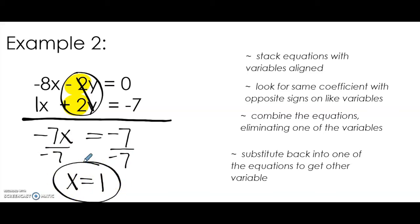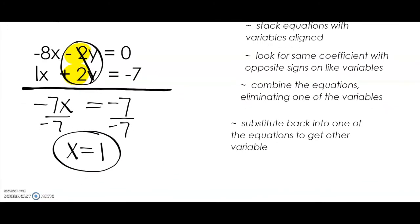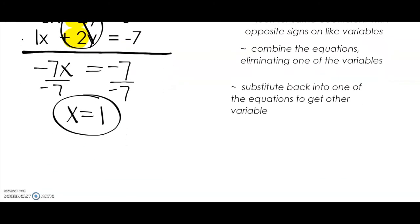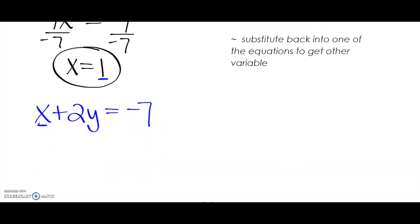We are going to do the last step, which is to substitute back into one of the equations to get the other variable — we need to get Y. I'm going to use the second equation: 1X plus 2Y equals negative 7. In the place of X, we are going to substitute the number 1, because that's the value we got for X when we eliminated Y. So 1 plus 2Y equals negative 7.